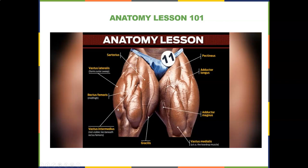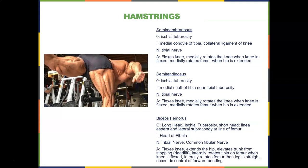The hamstrings are hard to work but important. The semimembranosus originates on the ischial tuberosity, inserts on the medial condyle of the tibia and collateral ligament of the knee, and is innervated by the tibial nerve.